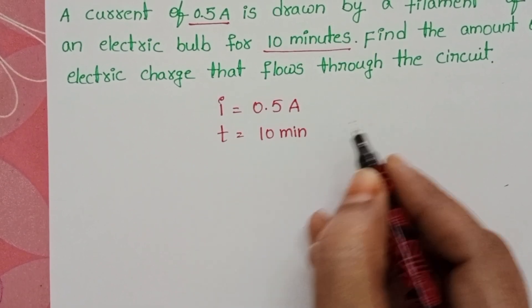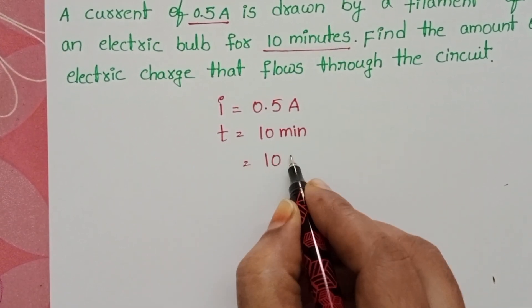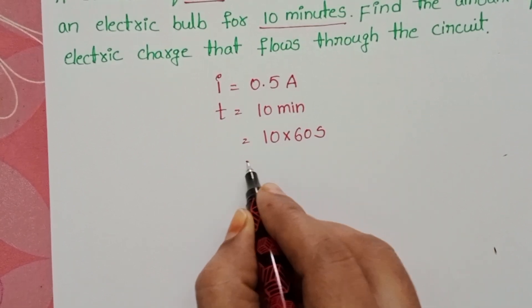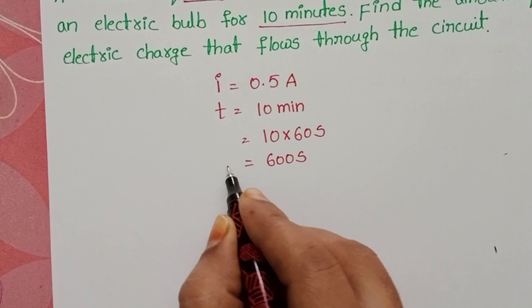Convert this time into seconds. 10 minutes into seconds: 1 minute equals 60 seconds, so time equals 600 seconds.